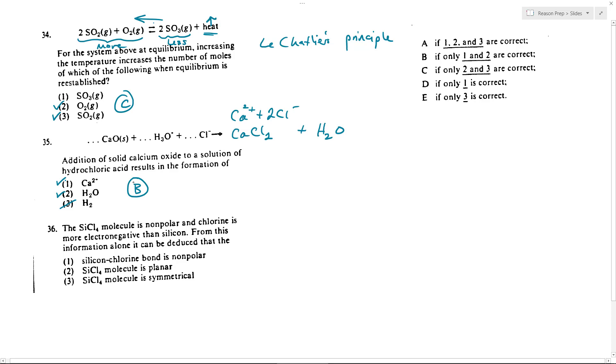Problem 36, the SiCl4 molecule is non-polar and chlorine is more electronegative than silicon. From this information alone, it can be deduced that. Well, we know that if this molecule is non-polar, that means the molecule must be symmetrical, because when you have a symmetrical molecule, that means you have a non-polar molecule. So we know 3 is true.